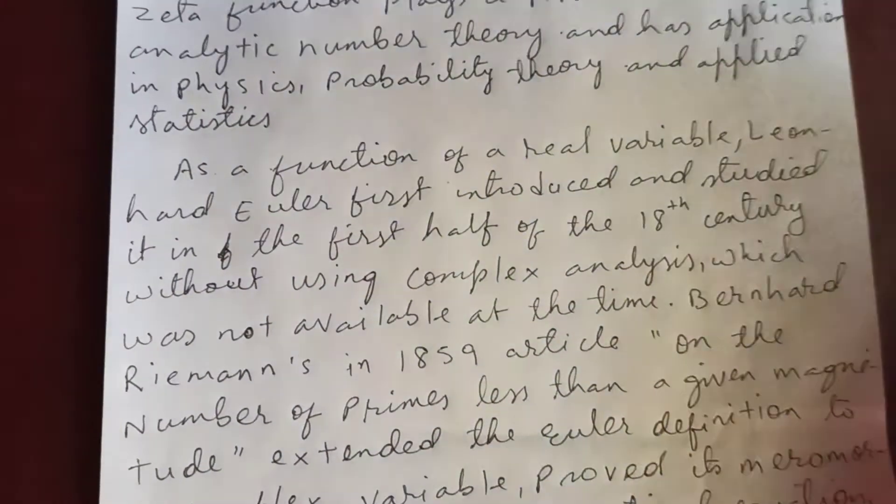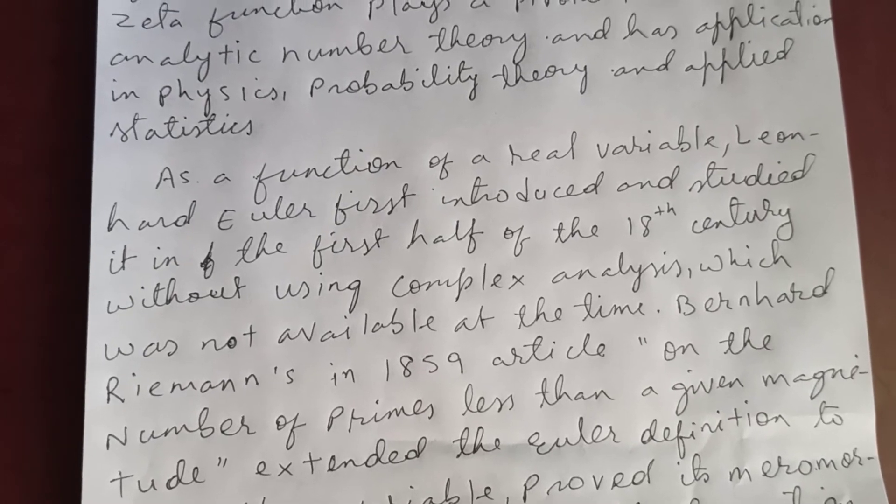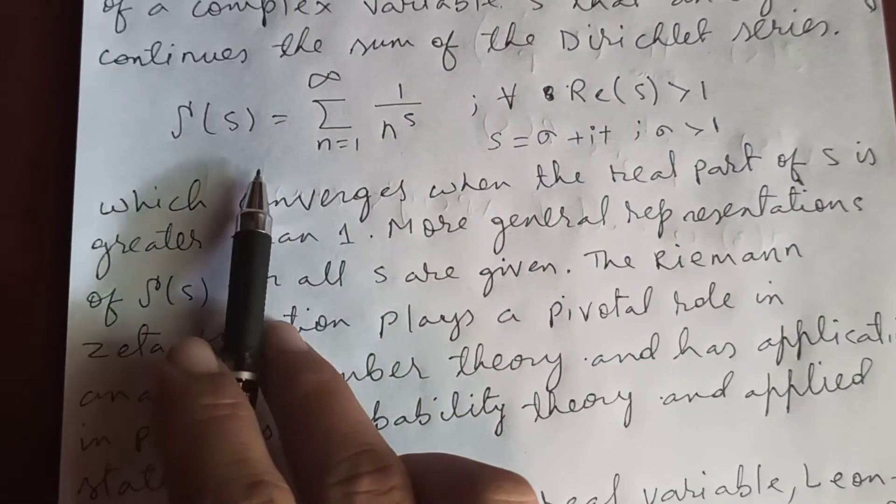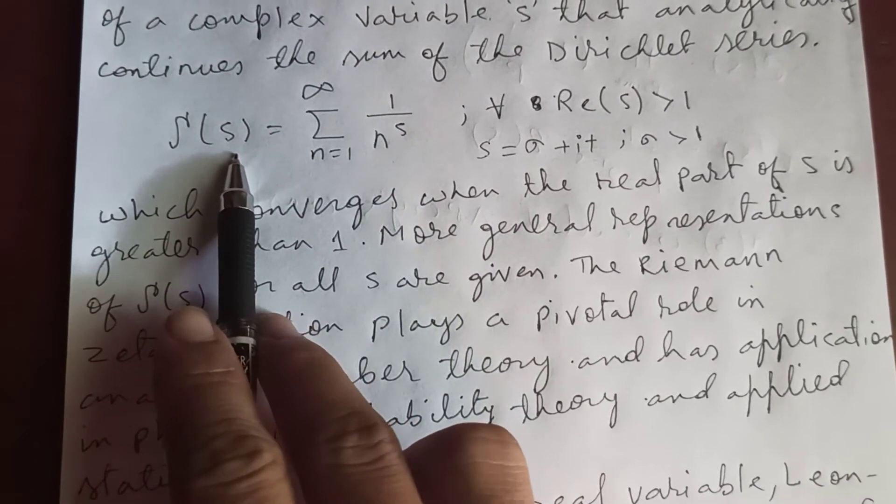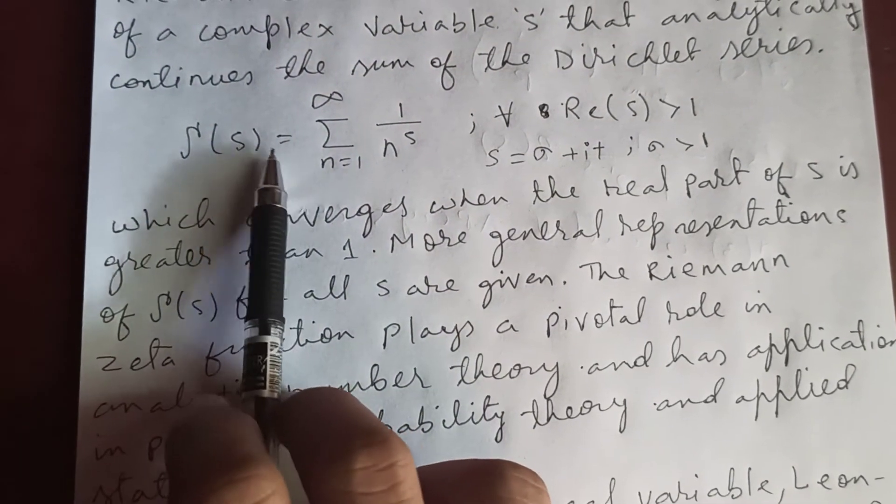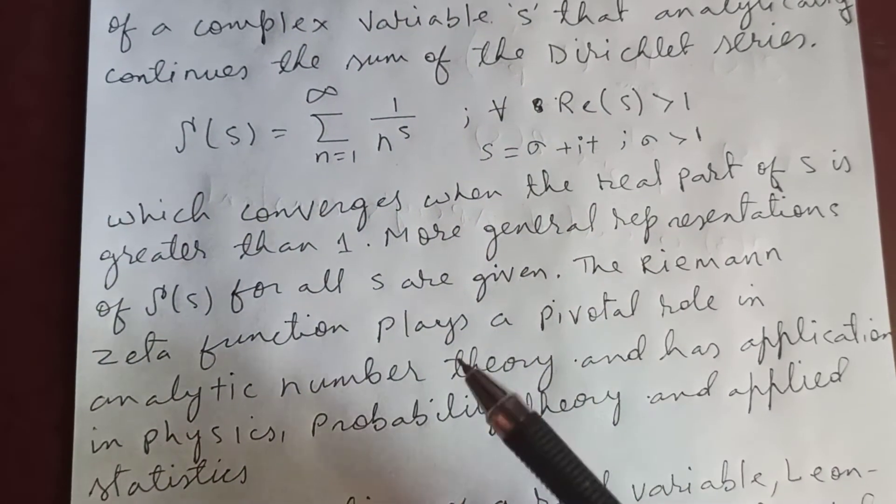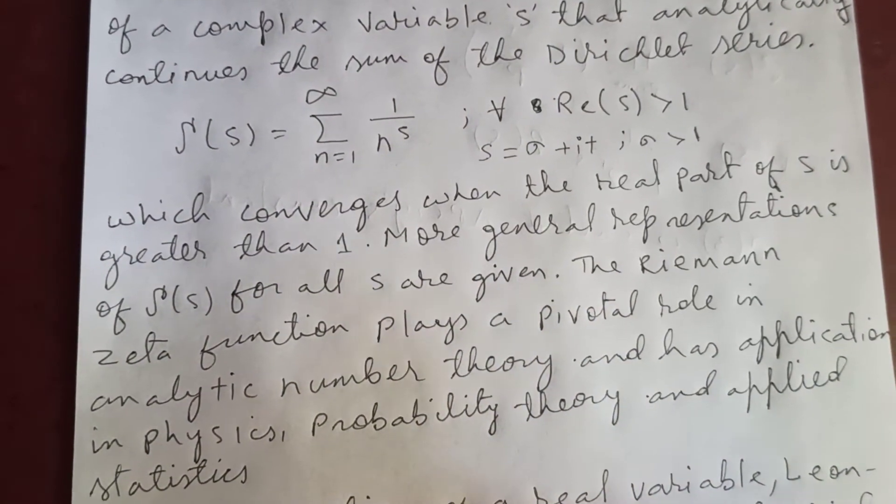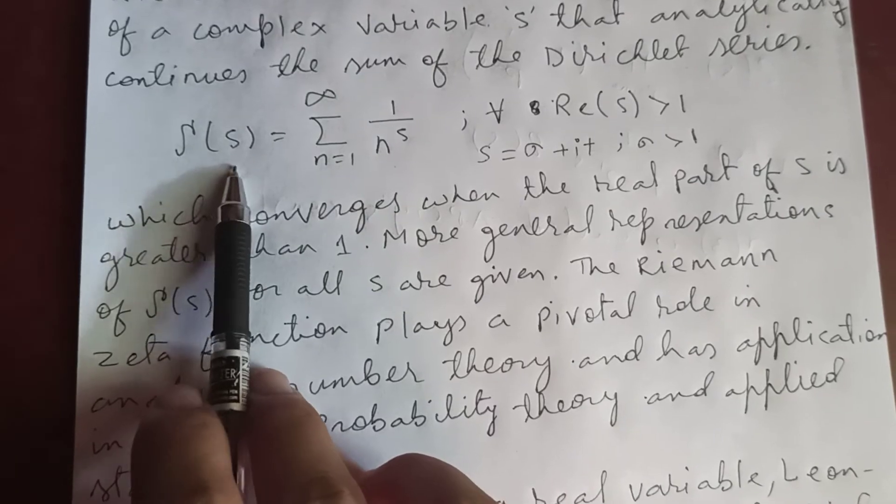Now as a function of real variables - we say that s is a complex variable, but Riemann, no Euler, was the first to study this series, not in complex. Euler studied this Riemann zeta function for only real numbers.